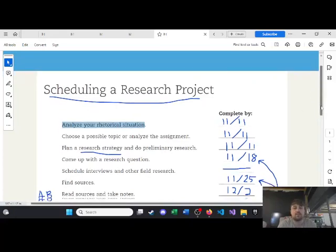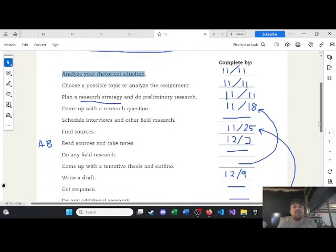And then these intermediate steps you want to consider based on how much time you think they'll take. So, here, choose a possible topic and analyze the assignment. You can do that the first day. As soon as you receive the assignment, you can read the assignment instructions, and you can think, okay, what's my topic? What am I interested in? And brainstorm. First day, right? And it doesn't take that much time to consider what topics you might be interested in.